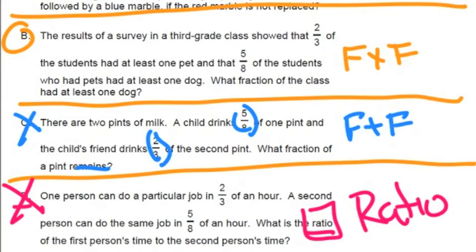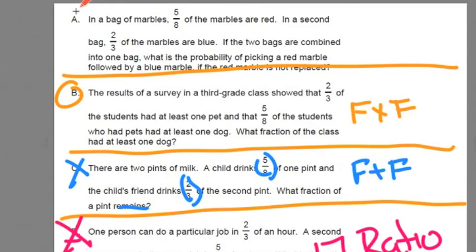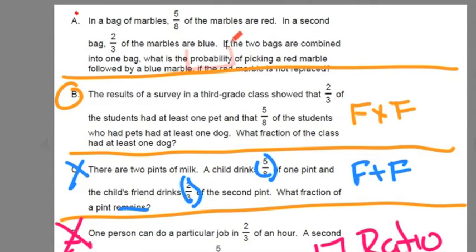We already know B is the answer, because B is modeling how to multiply two fractions and arrays are used to model multiplying fractions. So let's go to A. What's wrong with A?